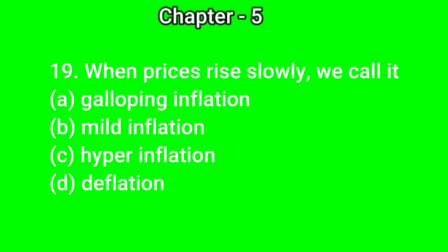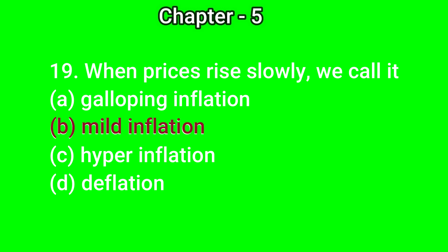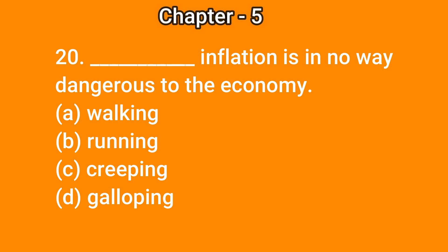Question number 19: When prices rise slowly, we call it — A) galloping inflation, B) mild inflation, C) hyperinflation, D) deflation. The correct answer is B) mild inflation. Question number 20: Dash inflation is in no way dangerous to the economy — A) walking, B) running, C) creeping, D) galloping. The correct answer is C) creeping. Thank you, children.